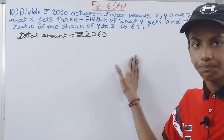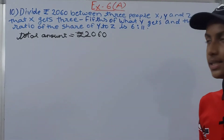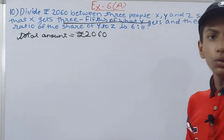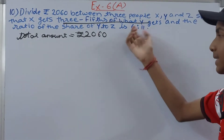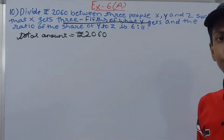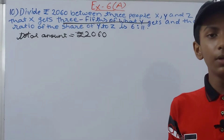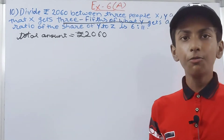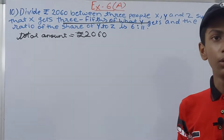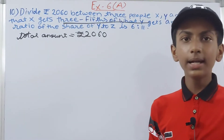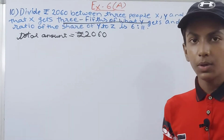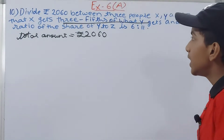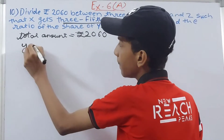So 6 is to 11 is the ratio between Y and Z. One more condition is that X gets three-fifths of what Y gets. If Y gets 6, X will get three-fifths of 6. But we don't know the actual amount — 6 is just the ratio share, not the actual amount. The actual amount is what we are being asked to find: the share of each of X, Y, and Z.